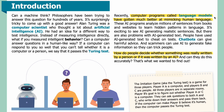Recently, computer programs called language models have gotten much better at mimicking human language. These AI programs analyze millions of sentences from books and websites to learn hidden patterns in language. It's exciting to see AI generating realistic sentences, but there are also problems with AI-generated text. People have used AI-generated text to cheat on tests, chatbots can give harmful advice, and scammers can use AI to generate fake information to trick people. How do people decide whether something was really written by a person or by an AI — and can they do this accurately?